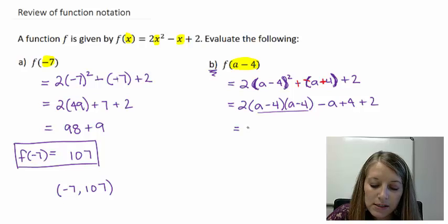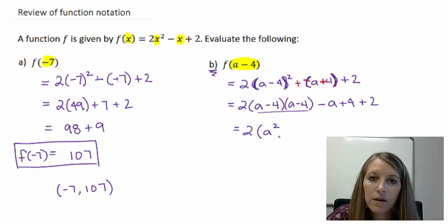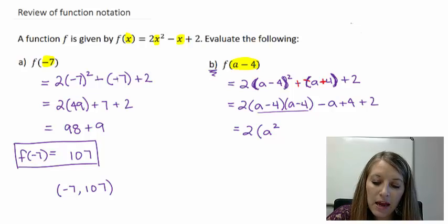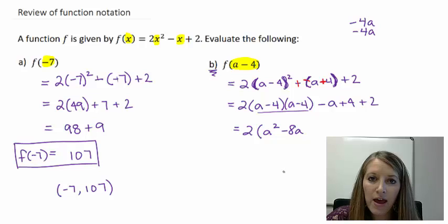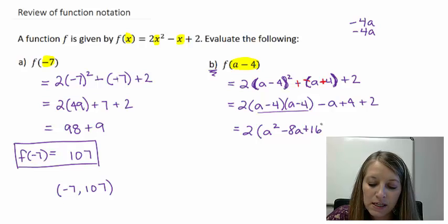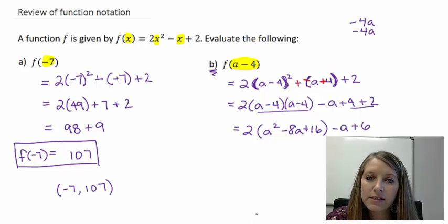When I foil this, I get a times a or a squared. Outside gives me a negative 4a. Inside gives me a negative 4a. So if I were to combine those, that gives me a negative 8a. So I'm kind of skipping a step in my foil process. And last, negative 4 times negative 4 gives me positive 16. Copy down my negative a. I can add those two numbers there. That gives me a plus 6.